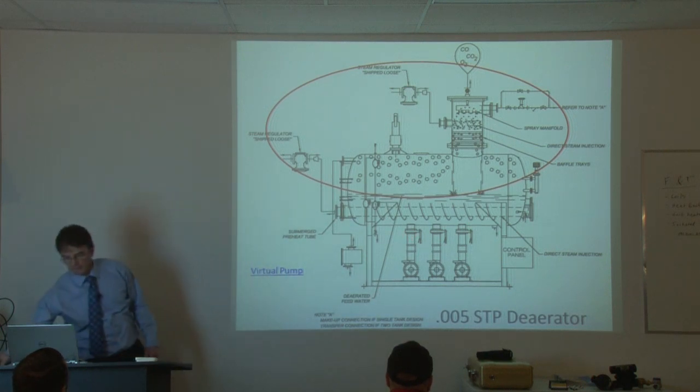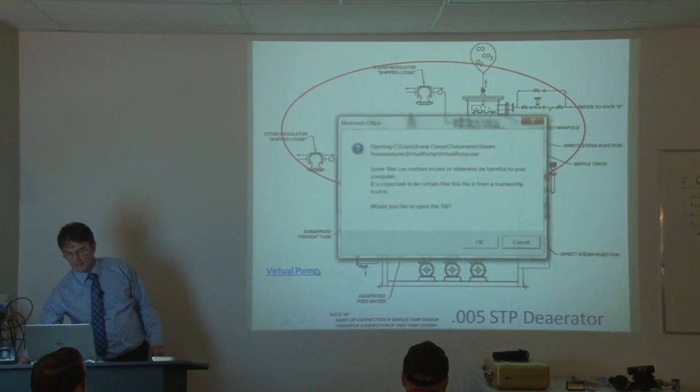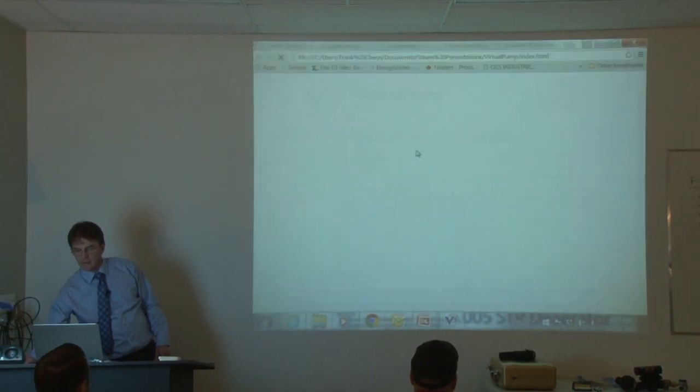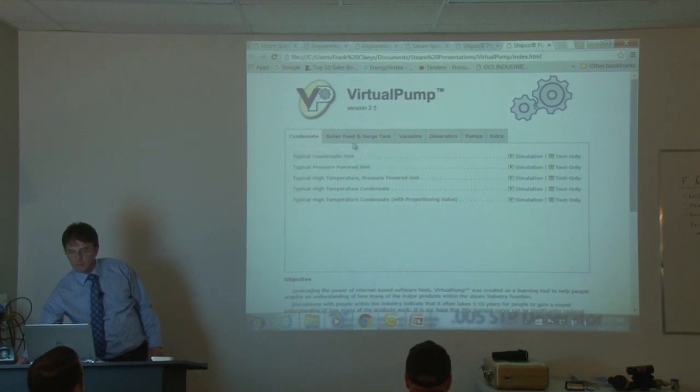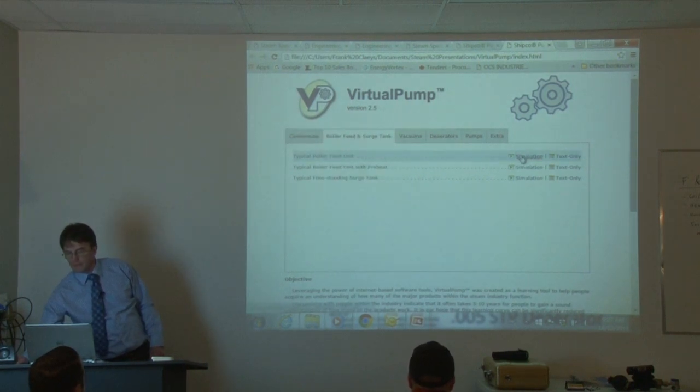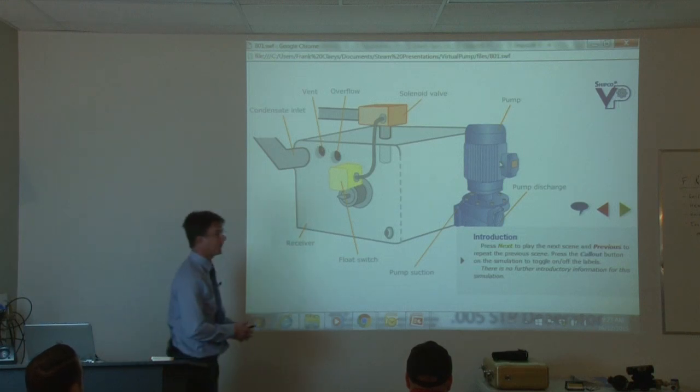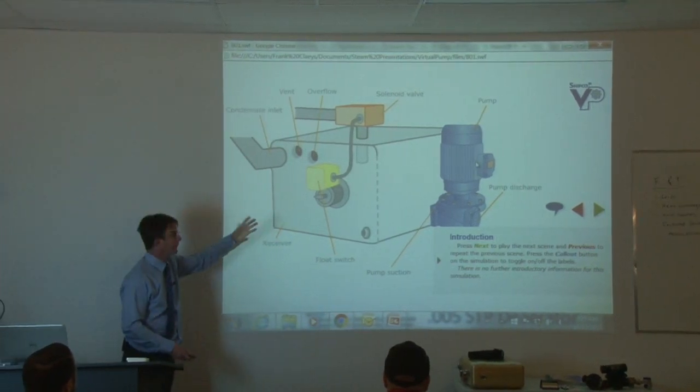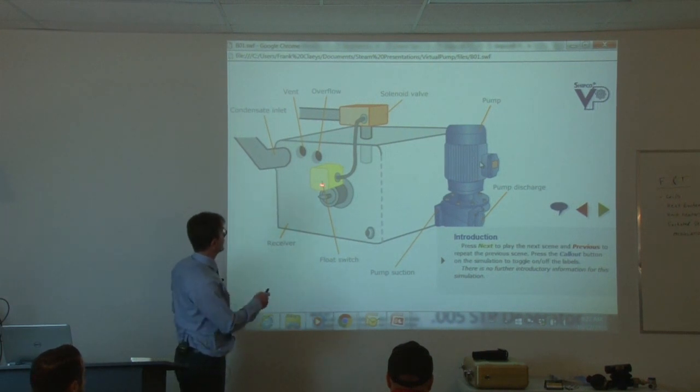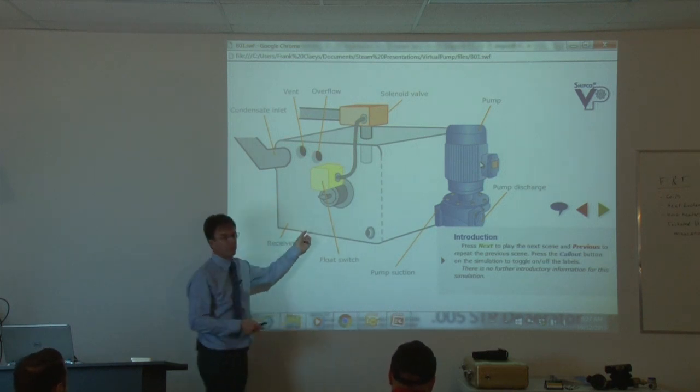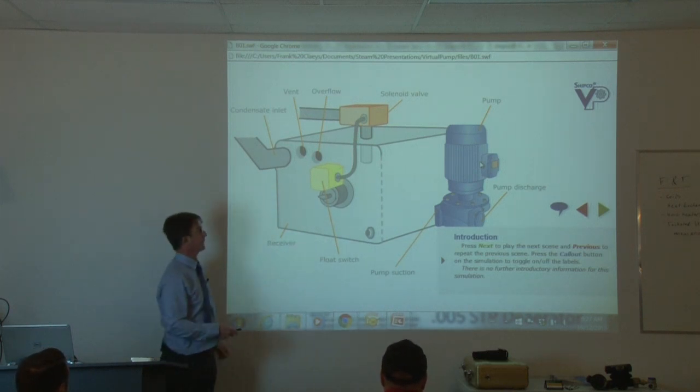So let's talk about the difference between a deaerator and a boiler feed pump. So we go back to our Shipco virtual pump. So a boiler feed pump, a very simple boiler feed pump, looks a lot like a condensate pump, but they operate differently. The main difference is the float switch doesn't activate the pump. The float switch activates the solenoid, and that's a key difference. You can't use a boiler feed pump as a condensate return because it just won't work.